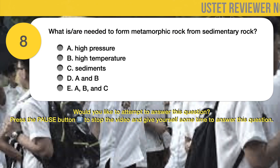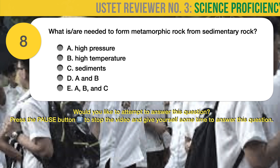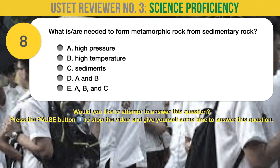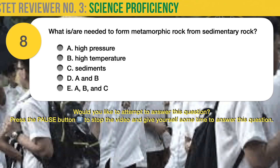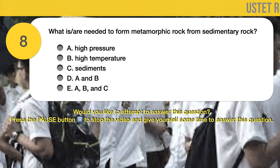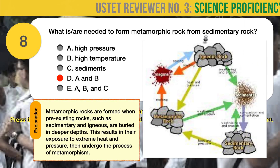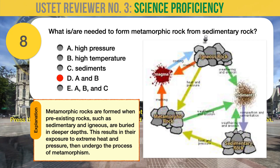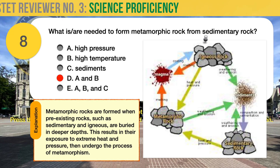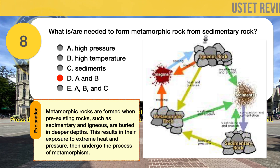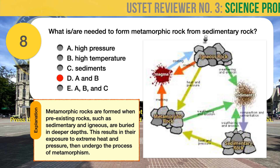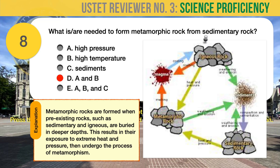Question number 8. Earth Science. What is or are needed to form metamorphic rock from sedimentary rock? A. High pressure. B. High temperature. C. Sediments. D. A and B. E. A, B, and C. The correct answer is D. High pressure and high temperature are needed to transform sedimentary rocks to metamorphic rocks. Metamorphic rocks are formed when pre-existing rocks such as sedimentary and igneous are buried at deeper depths, exposing them to extreme heat and pressure, undergoing the process of metamorphism. Therefore, the correct answer is letter D.